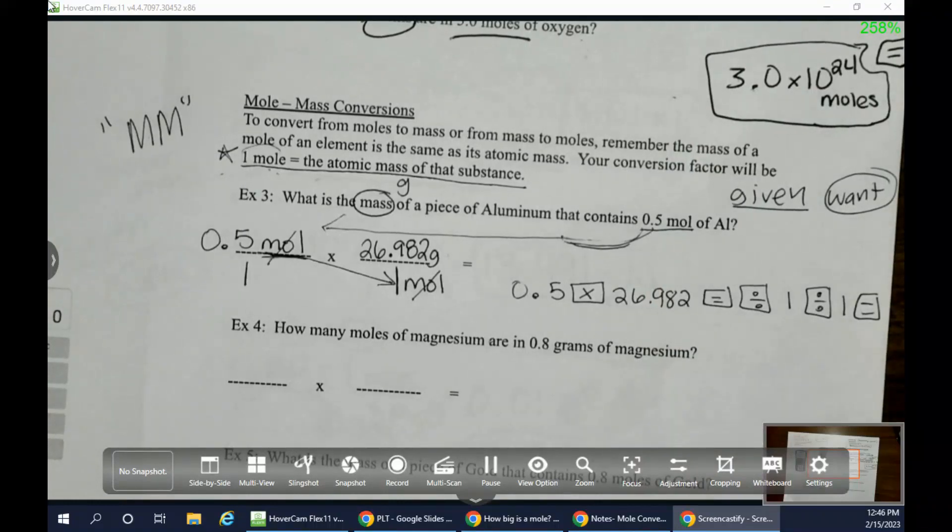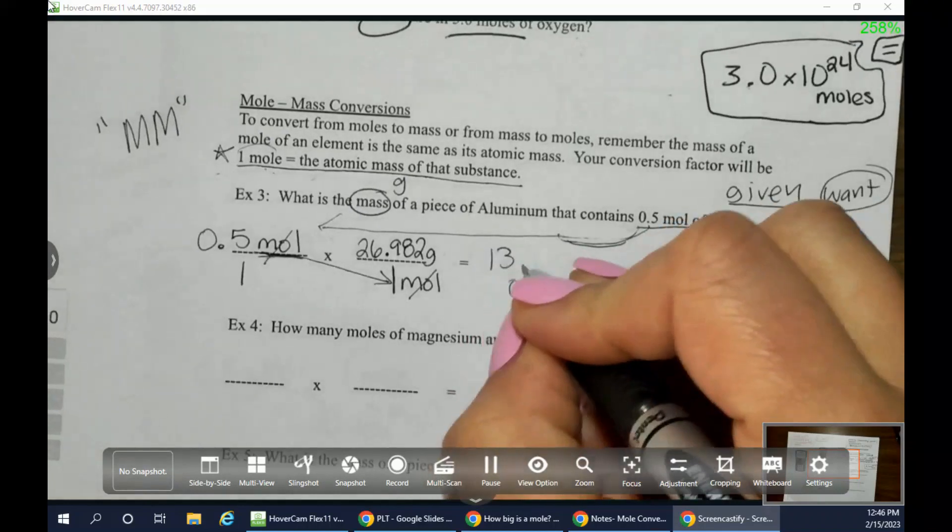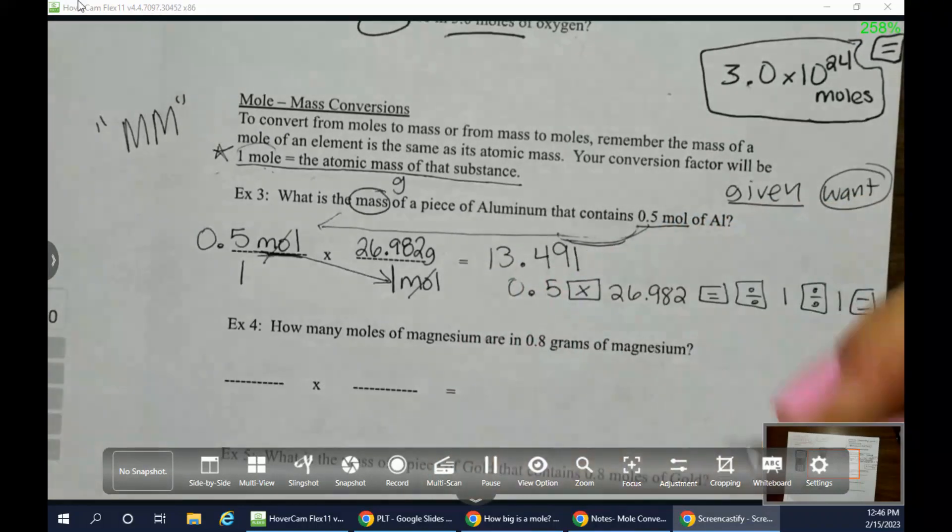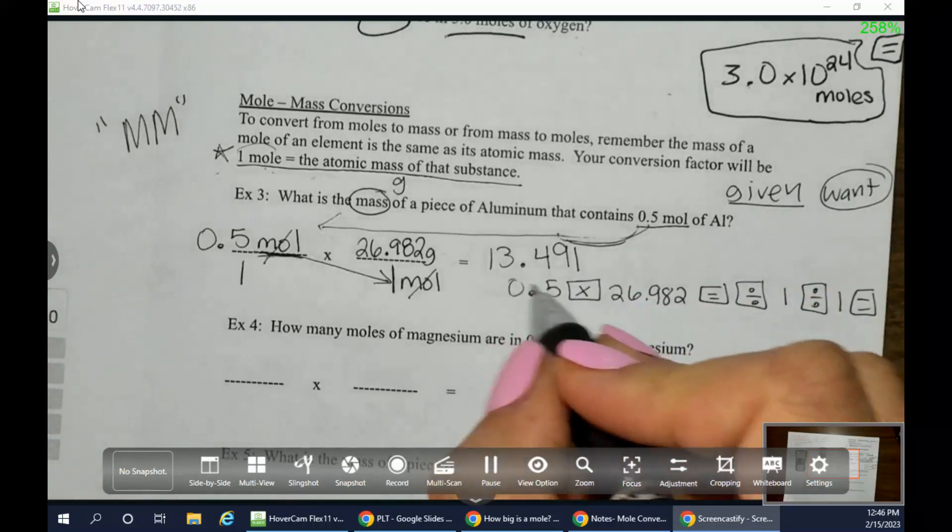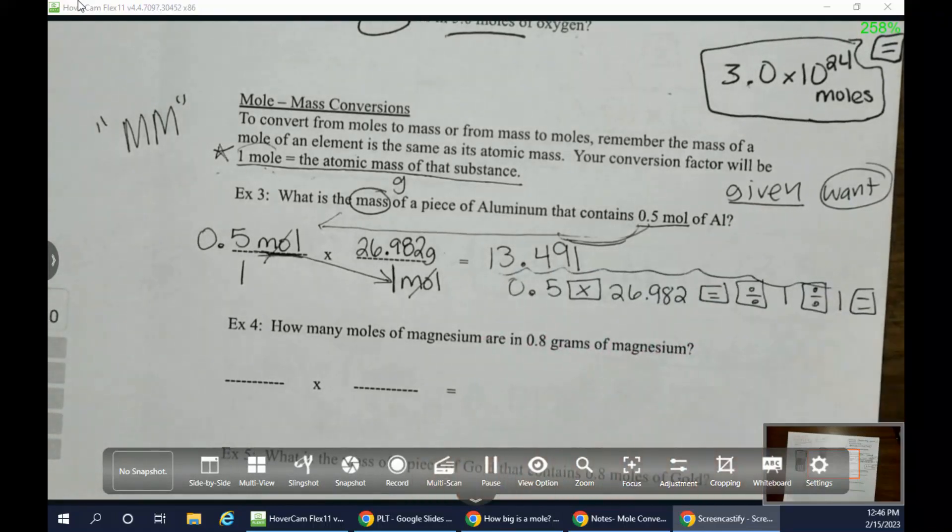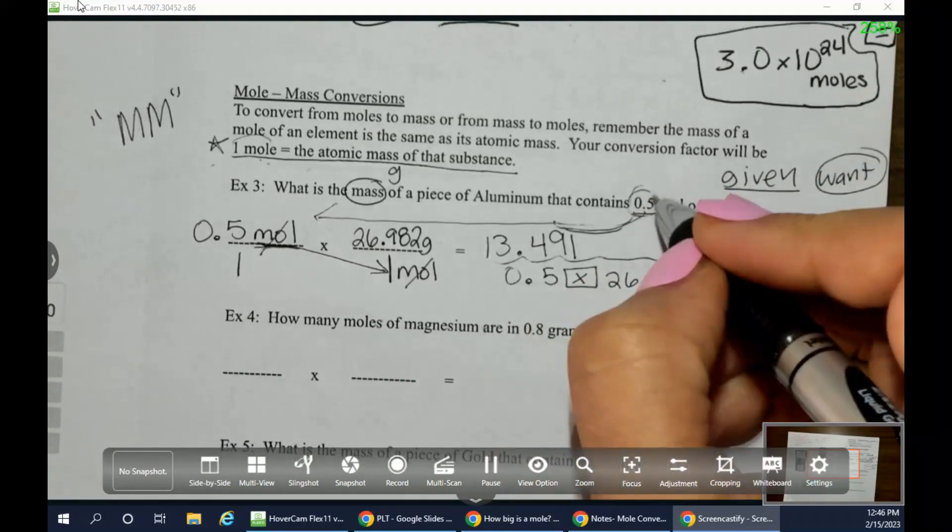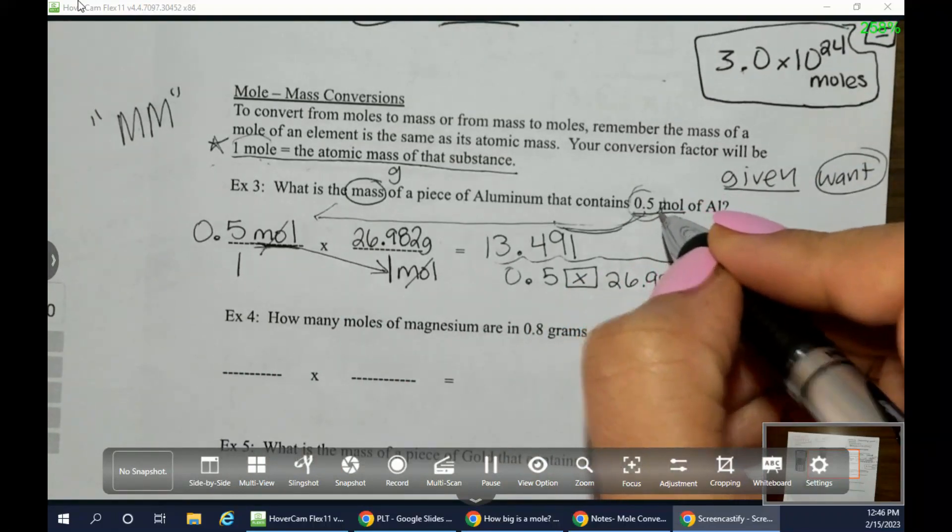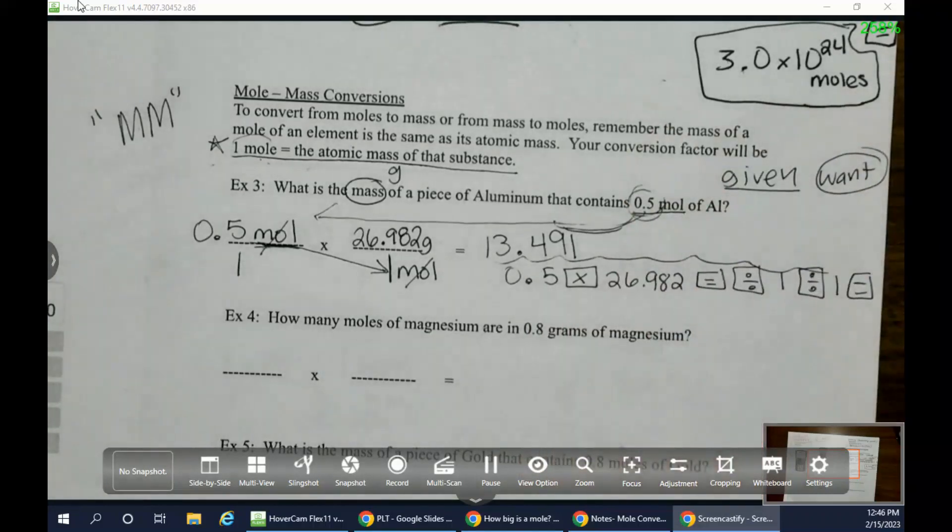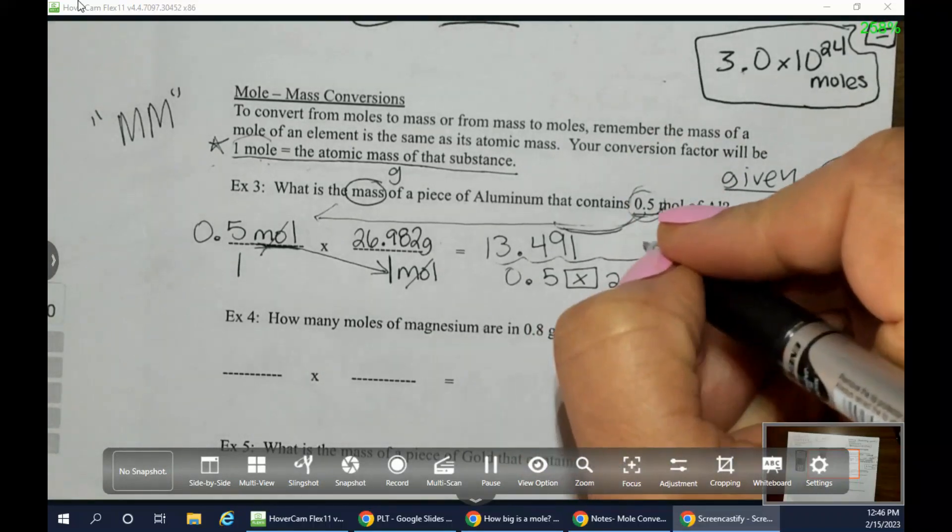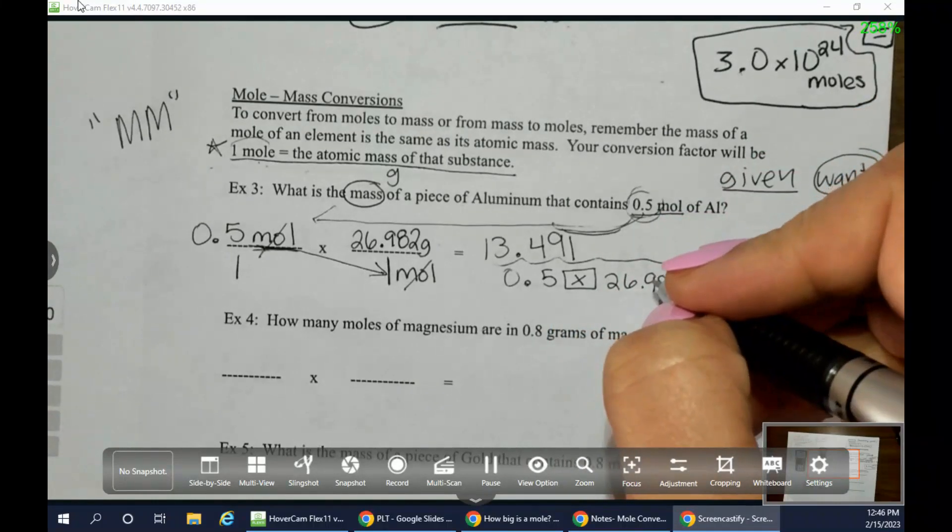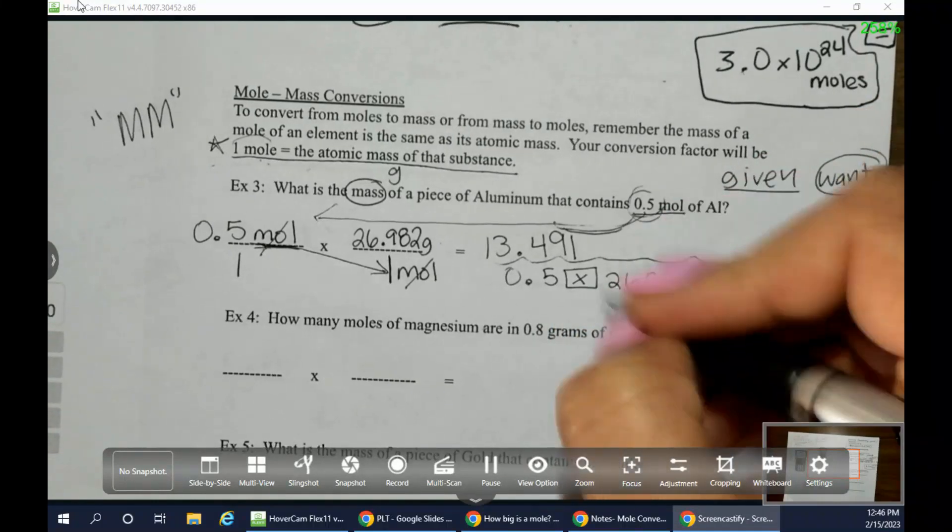So when I type that in or when you guys typed it in, I haven't done it yet. So 13, yeah. 13.491 was what shows up on my calculator.